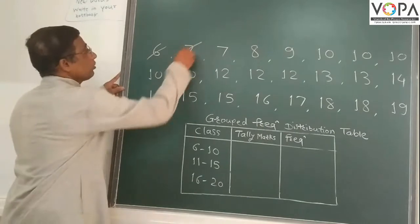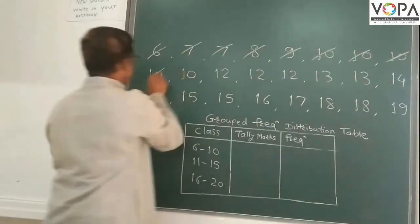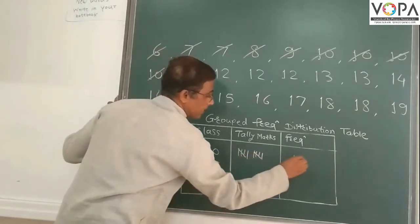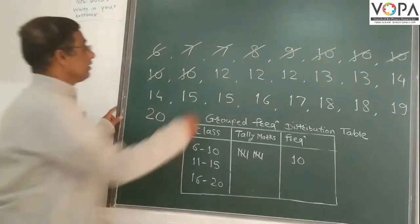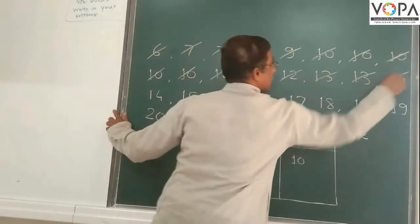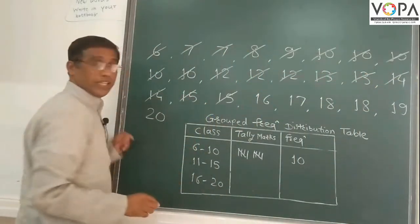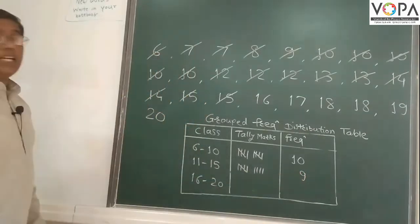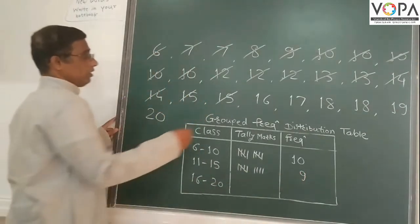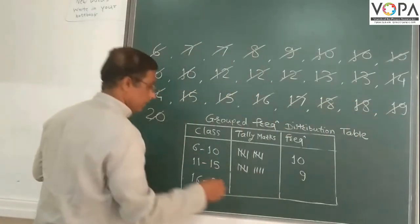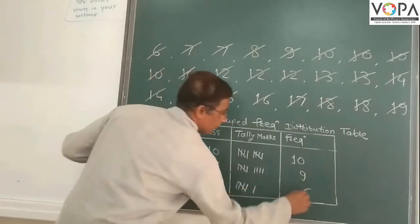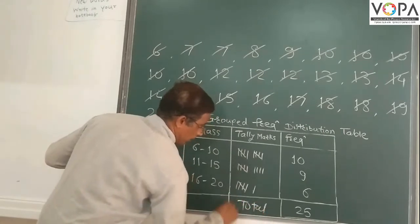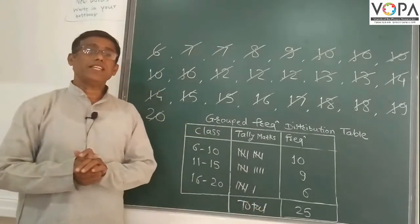6 to 10: counting the tallies 1, 2, 3, 4, 5, 6, 7, 8, 9, 10. So this frequency is 10. Now 11 to 15: counting 1, 2, 3, 4, 5, 6, 7, 8, 9. We get 9 frequency. So 11 to 15, there will be 9 scores. 16 to 20: counting the tallies, we get frequency 6. So total number is 25. This is the group frequency distribution table.